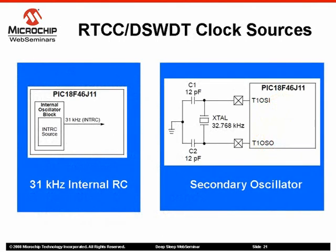The RTCC and DeepSleep Watchdog timer need a clock source to operate. When using the 31 kHz internal RC oscillator as a clock source, no external circuitry is required. For more timing accuracy, an external 32.768 kHz crystal can be connected to the microcontroller's secondary oscillator pins, as shown in the example circuit. To achieve low-power consumption for DeepSleep applications, the secondary oscillator has very low drive levels. The downside is increased sensitivity to rapidly changing signals in close proximity. Locate the crystal and capacitors as close to the microcontroller as possible, and avoid routing signals other than VSS and VDD near the oscillator circuit.